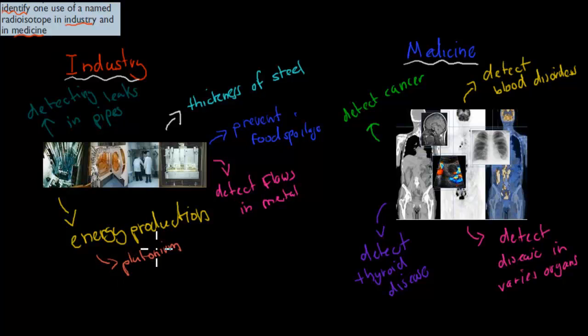So instead of using coal for energy, we can also use plutonium as well to produce electricity. We can use it to detect flaws in metal objects, and I'll go over this in a second, how that works. We can use it to prevent food spoilage. Like gamma radiation can destroy pathogens, so bad things in food, and that's how we can prevent food spoilage. We can also assess the thickness of steel, so we can see how thick it actually is. And we can also detect leaks in pipes. So in this case, it's often used for detection purposes in industrial uses.